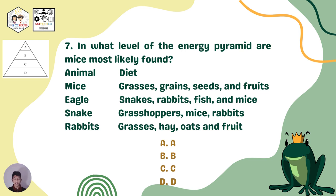For question seven, look at the same pyramid and the animals and their diets. The question is: In what level of the energy pyramid are mice most likely found? Is it on level A, B, C, or D?